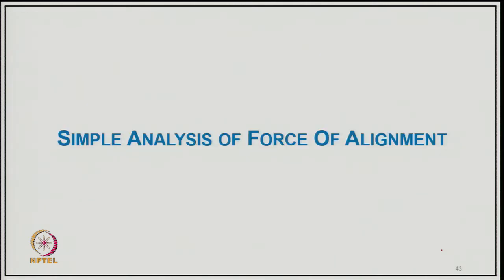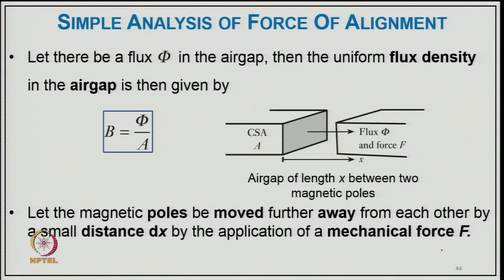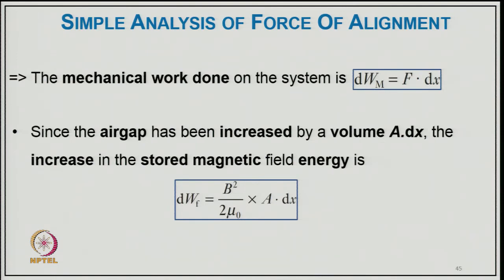In the simple analysis of force of alignment, let there be flux φ in the air gap, then the uniform flux density is B = φ/A, where A is the cross-sectional area. Let the magnetic poles be moved further apart by a small distance dx by application of a mechanical force F; then the mechanical work done is dW_m = F·dx. Since the air gap volume has increased by A·dx, the increase in stored field energy is δW_f = B²/(2μ₀) · A·δx.